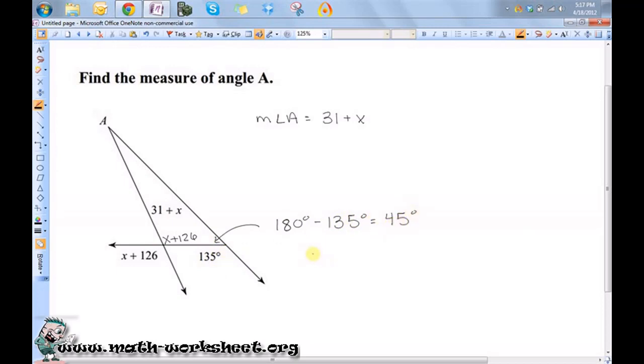So, that means if I do 31 plus x, which is the measure of angle A, plus x plus 126, plus 45 degrees, I should get 180 degrees.